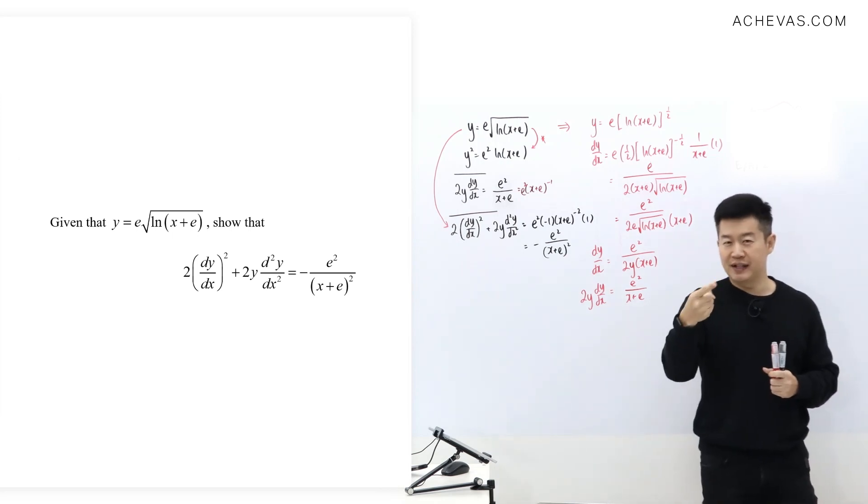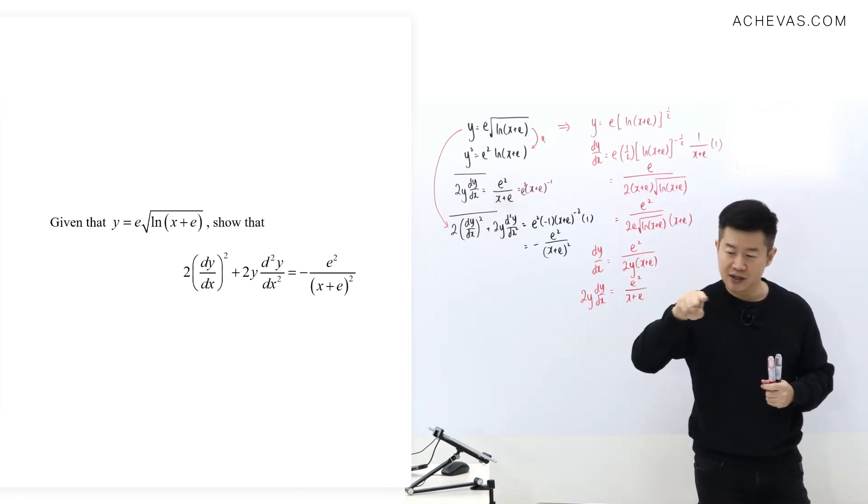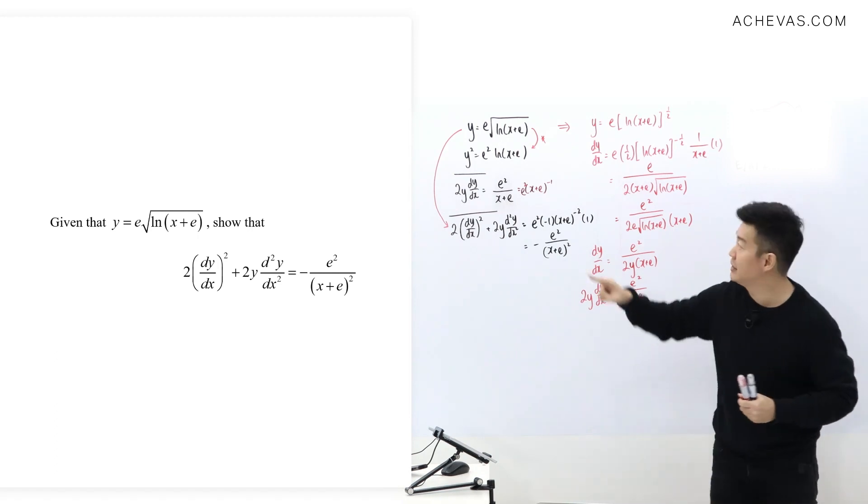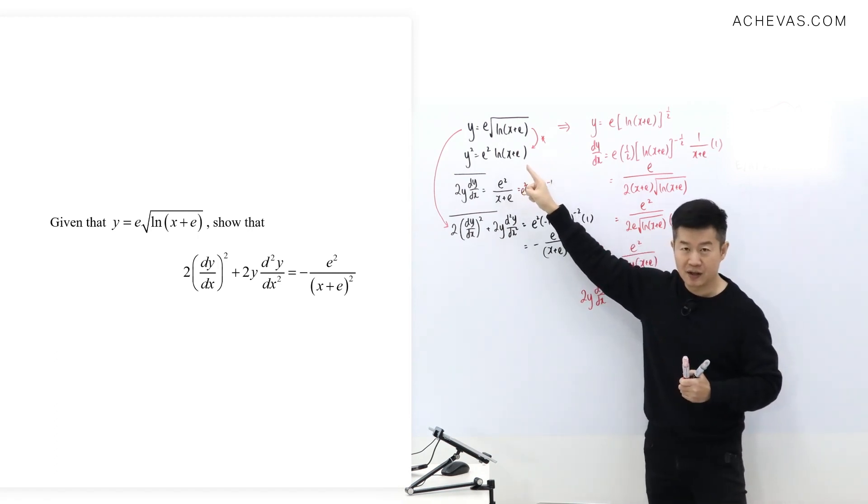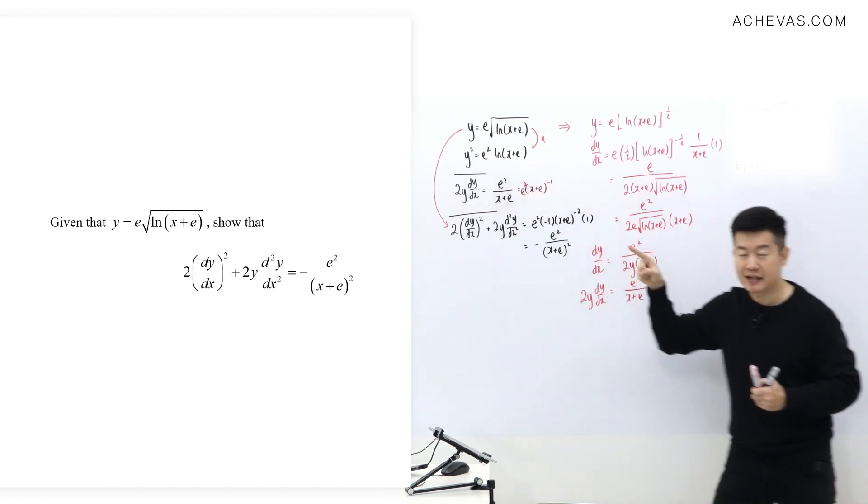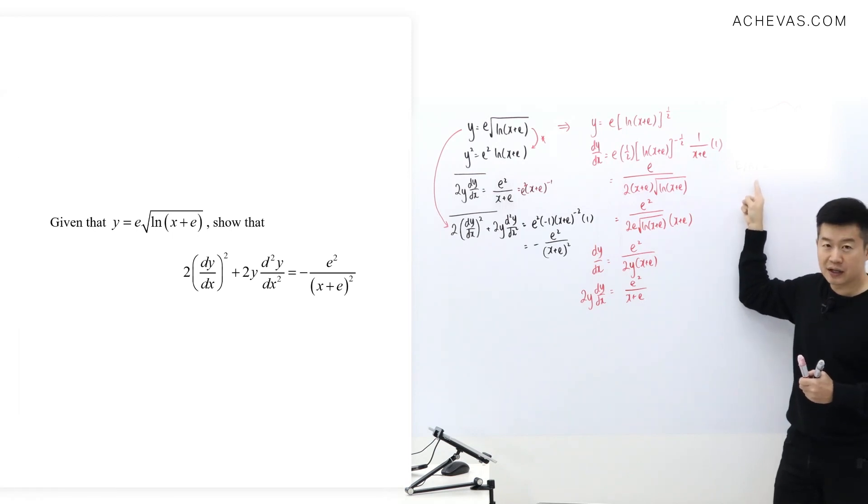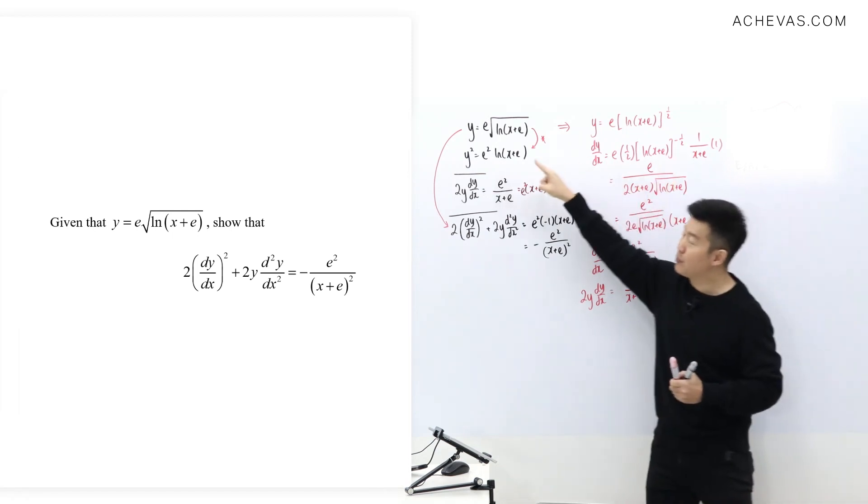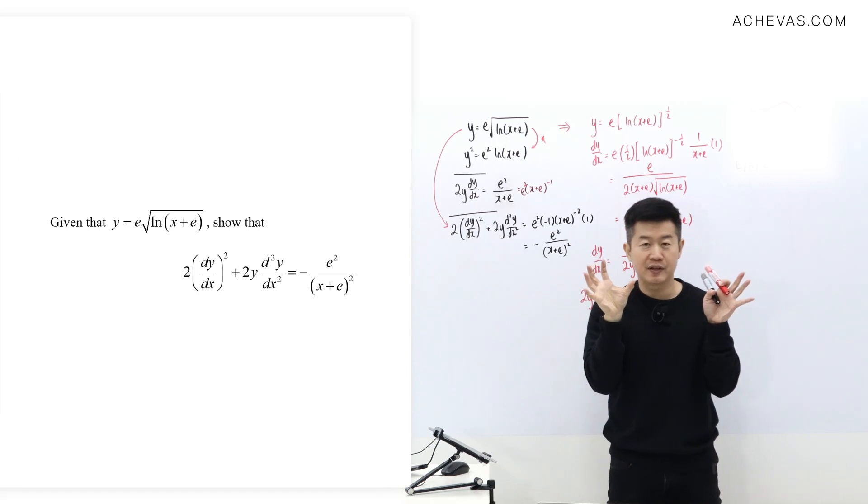This is something that was done not because we are taught how to differentiate. This was something that somehow was done because somebody had done some exploration, analysis, and decided to improvise by doing a square on both sides.